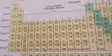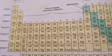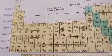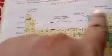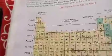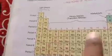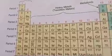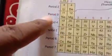Now in Mendeleev's periodic table, there are two types of lines — horizontal and vertical. The horizontal rows in the table are called periods. The vertical rows are known as groups. So horizontal rows are known as periods and vertical rows are known as groups.